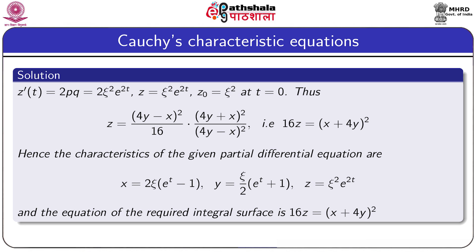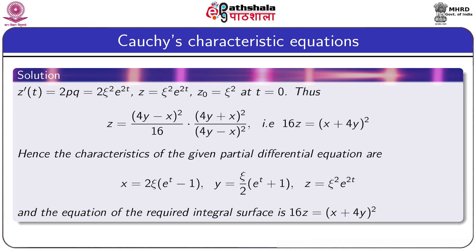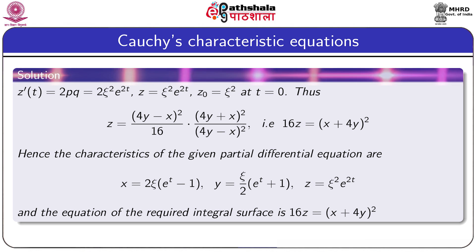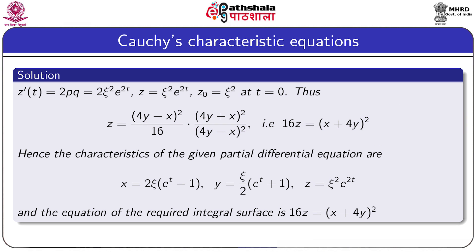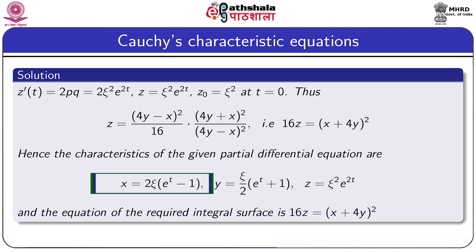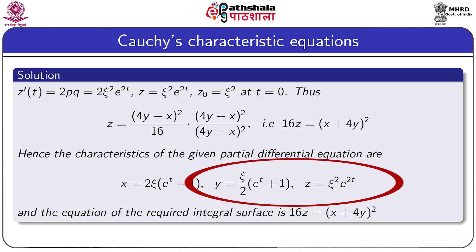Applying z′ = 2pq and integrating with the initial condition z₀ = ζ² at t = 0, we get z = ζ²e^(2t). Substituting the expressions for ζ and eᵗ in terms of x and y yields the integral surface z = (x + 4y)², which passes through the given parabola. The parametric equations x = 2ζ(eᵗ−1), y = (ζ/2)(eᵗ+1), z = ζ²e^(2t) are Cauchy's characteristic curves.